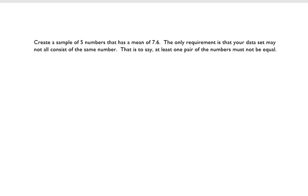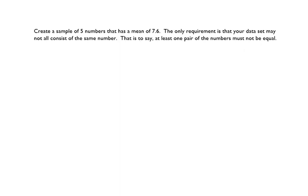In this case, we're given the mean, and we're told that there are five numbers, but we need to work backwards. So we create a sample of five numbers that has a mean of 7.6. The only requirement is that your data set may not all consist of the same number. So we could have two numbers that are the same, but they can't all be 7.6.